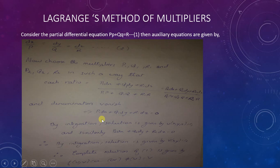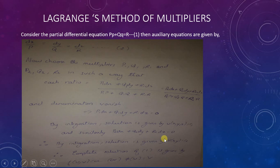When the denominator vanishes, P1 dx plus Q1 dy plus R1 dz equals 0. By integration, the solution is u(x, y, z) equals C1. Similarly, P2 dx plus Q2 dy plus R2 dz equals 0, and by integration the solution is v(x, y, z) equals C2. The complete solution of equation 1 is given by F(u, v) equals 0, or φ(u) equals v.